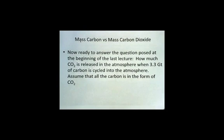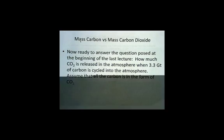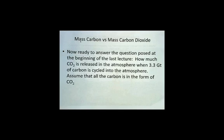Now we're ready to answer the question that we posed at the beginning of the last lecture, which was how much carbon dioxide is released in the atmosphere when 3.3 gigatons of carbon is cycled into the atmosphere. We know that 3.3 gigatons number comes from the human factors and how much extra carbon is going into the atmosphere that cannot be pulled back down by natural carbon dioxide dissolving in the oceans and being absorbed into living systems through plants. Assume that all the carbon in the atmosphere is in the form of carbon dioxide.